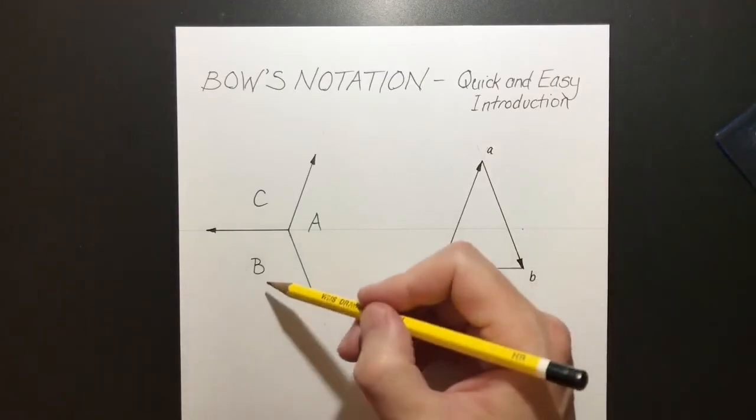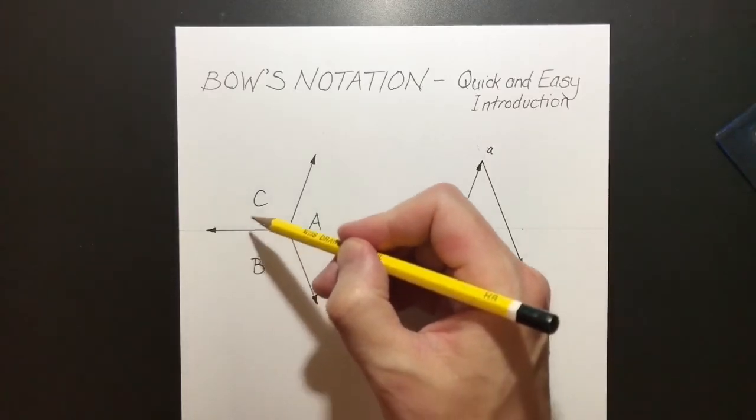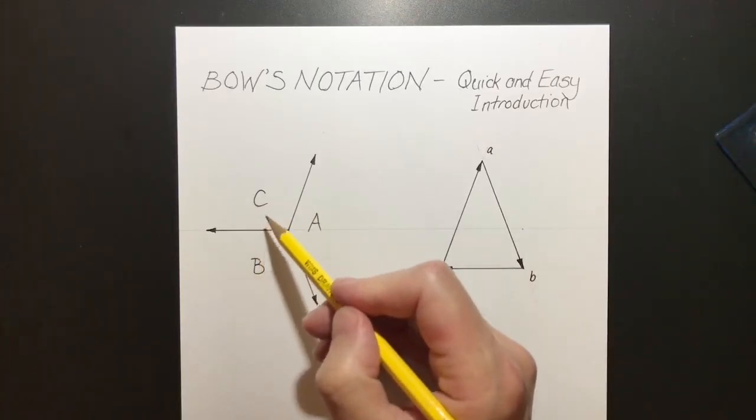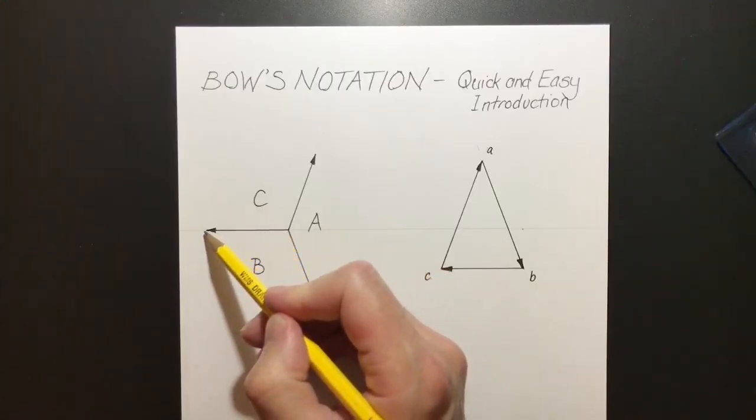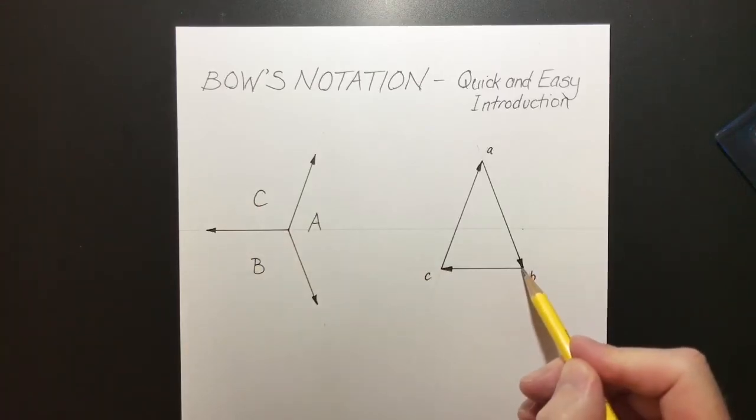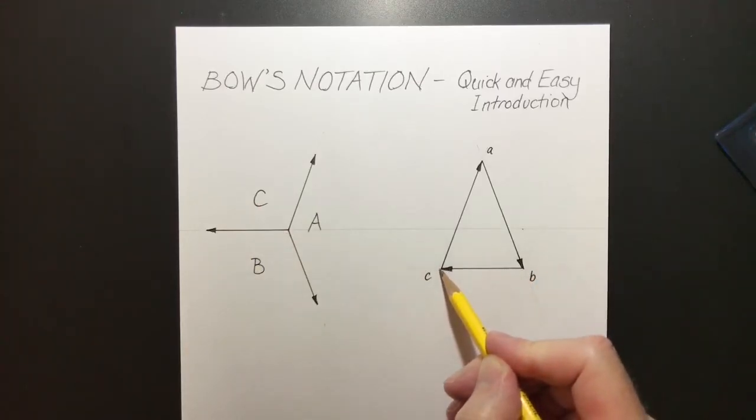Next we move around to B, C, and the force between B and C is this one here, and it's represented on our force diagram between the lowercase letters B and C here.